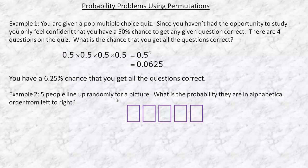Example number two. Five people line up randomly for a picture. What is the probability they are in alphabetical order from left to right? The number of the sample space would be 5 factorial or 5 permute 5, because we're taking five people and arranging them all in a line. So that would be 120 ways. If you think of the counting problem, there's five ways to put a person here, times four ways here, times three, two, and one, which is 5 factorial or 120.